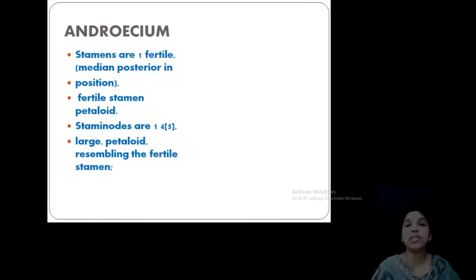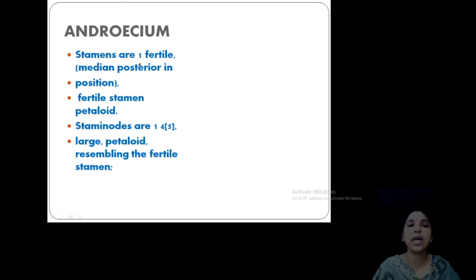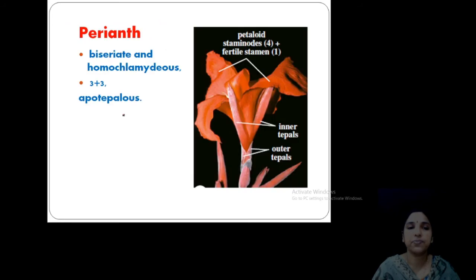Now, looking into the androecium. Stamens, I already told you the feature of the series Scitamineae: only one fertile stamen. Here also it is, that is a median posterior position, that fertile stamen. And all others are modified into staminodes. That fertile stamen is petaloid, that is a petaloid stamen. Very important point, you have to study this in the case of Canna. The stamens are only one fertile and median posterior position, and the fertile stamen is petaloid.